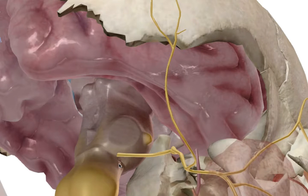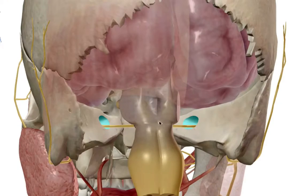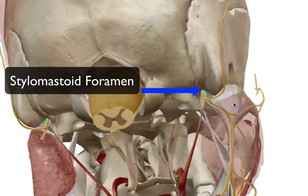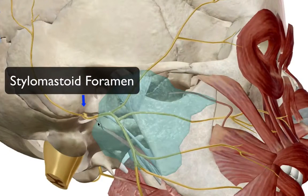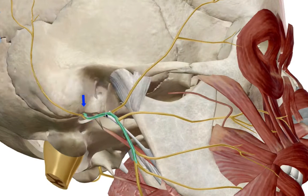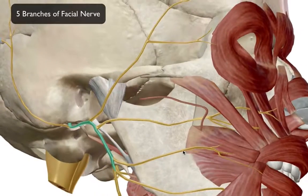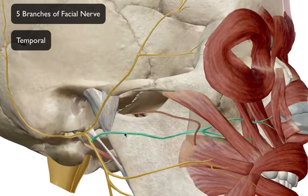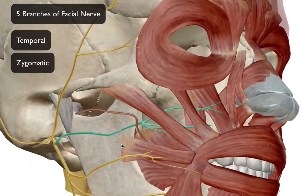The facial nerve protrudes out of the pons, exits through the internal acoustic meatus, then winds its way out through the stylomastoid foramen. Moving the salivary gland aside, you can see the facial nerve branches into five main branches. Starting from the most superior and moving inferiorly: the temporal branch, then the zygomatic branch, then the buccal branch.